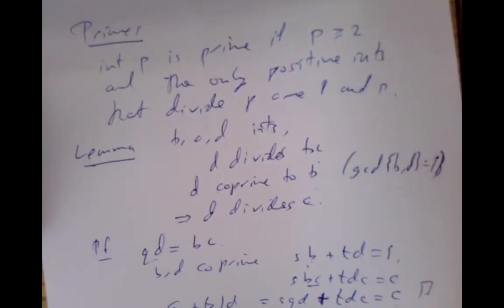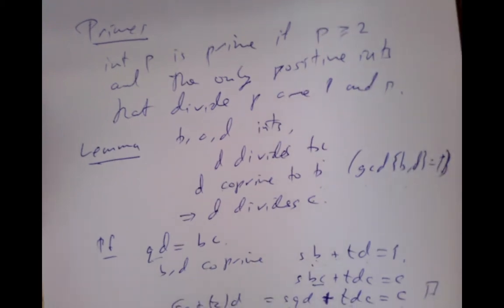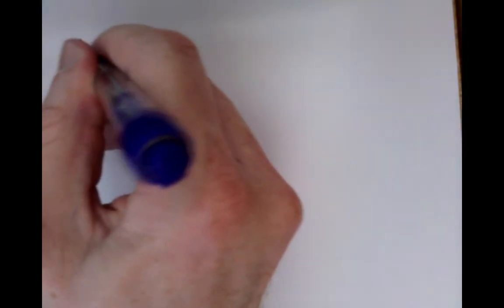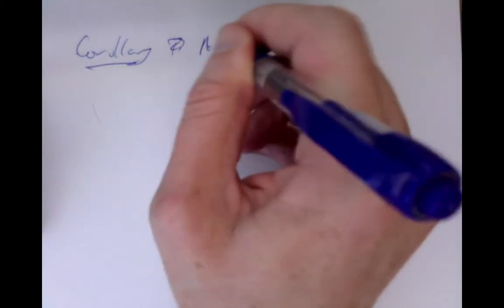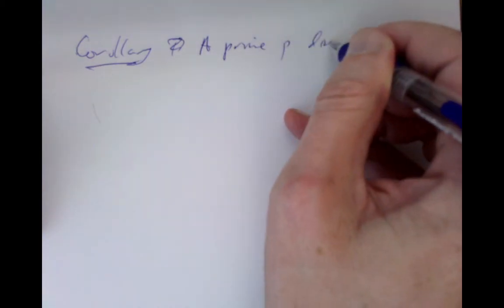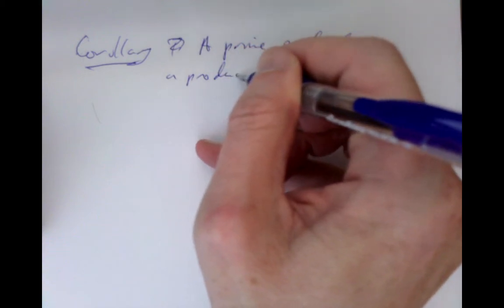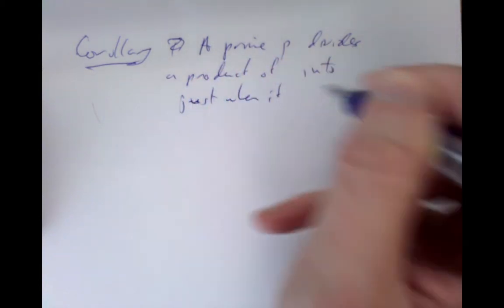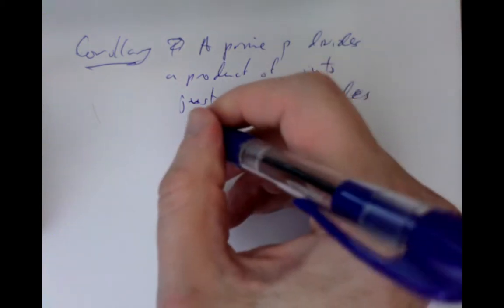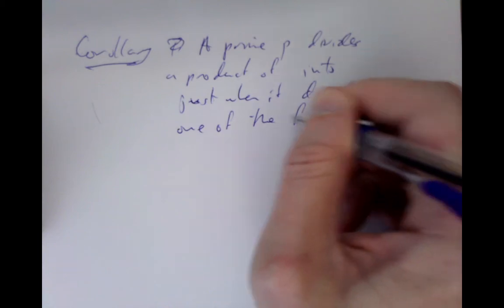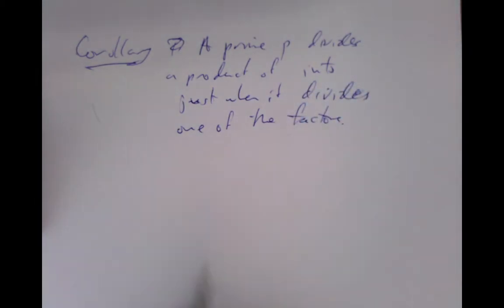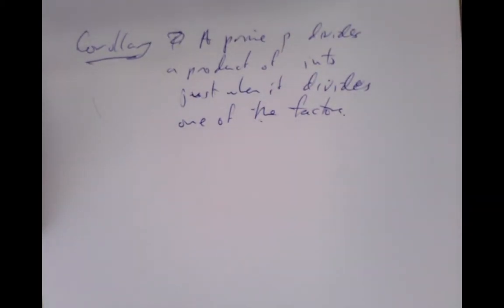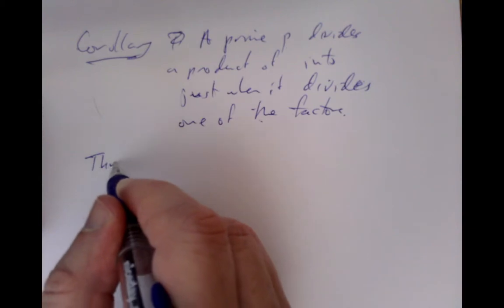As a consequence of this result — plugging in d being prime — we get a corollary: a prime p divides a product of integers if and only if it divides one of the factors. Why is that true? Because a prime is coprime to everything except itself. So if p divides bc but doesn't divide b, it must be coprime to b, and therefore it divides c.